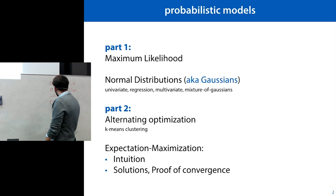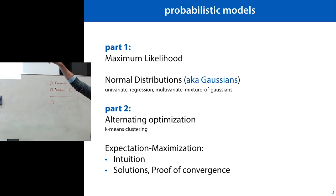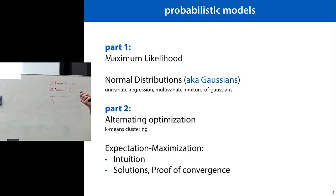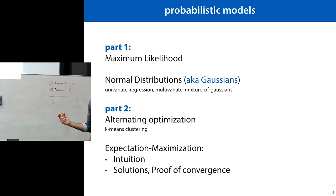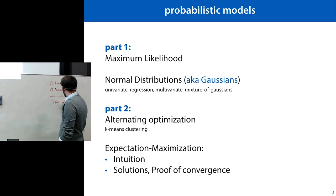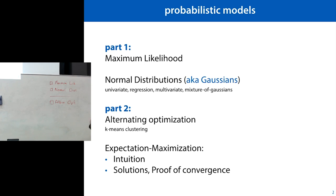After the break we will look at the mixture of Gaussians model — Gaussians is just another name for a normal distribution — which is one model that is difficult to fit easily using maximum likelihood. That's what we're looking at in the second half: how to fit that, and a new philosophy for optimization. Instead of gradient descent, we'll look at alternating optimization, in the context of clustering.